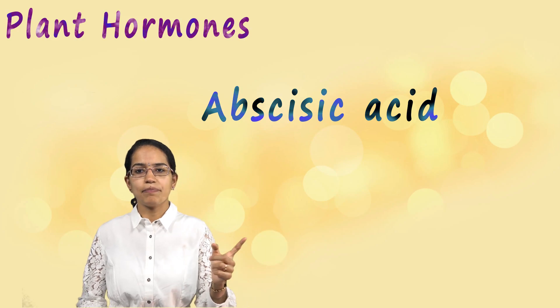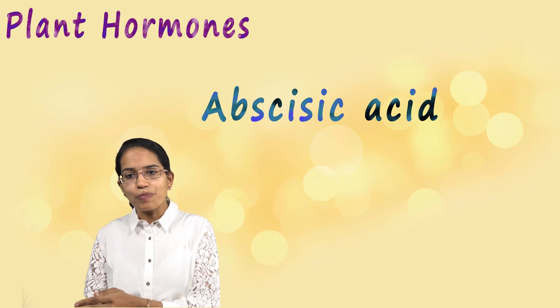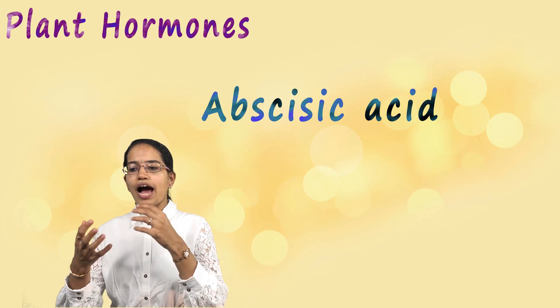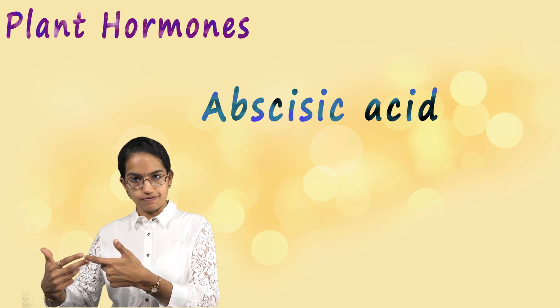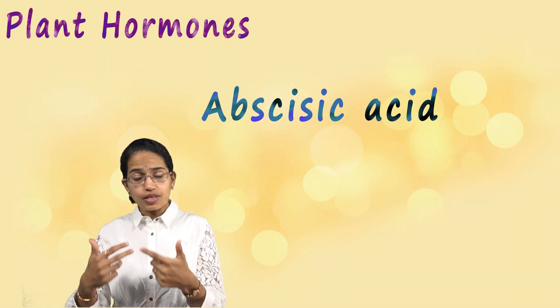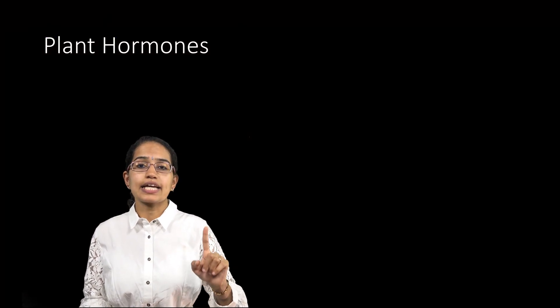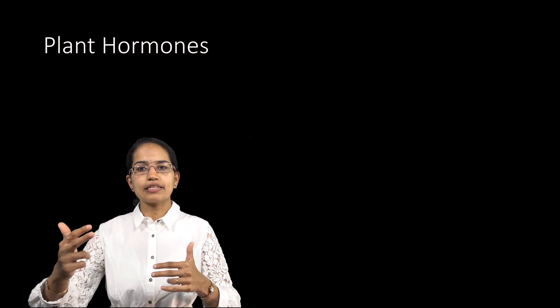The last one, and the very important one, is abscisic acid — and that's the one that was there in the brain teaser. This is a hormone that inhibits growth and it leads to wilting of the leaves.